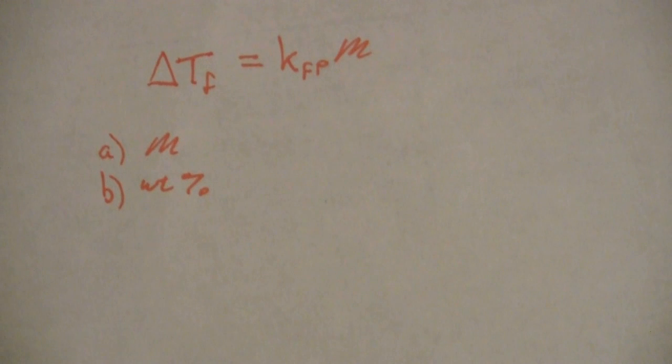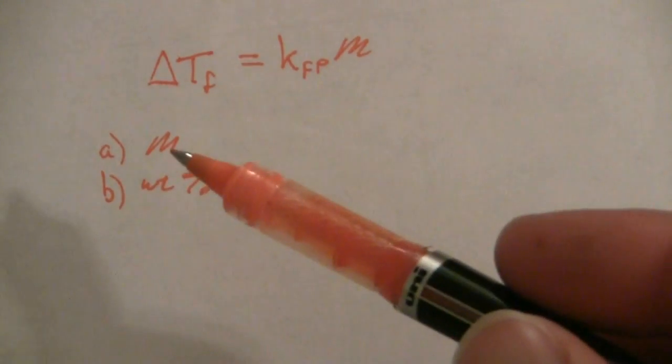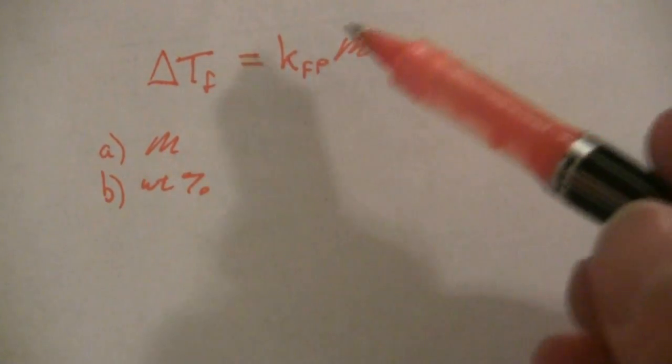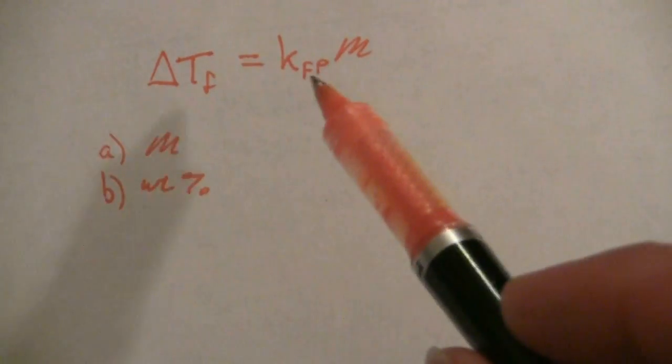Delta Tf equals the freezing point constant times the molality. The constant, of course, we will need to find. It's asking first for the molality, so we need to solve for that, which means we need to have the delta Tf and the kf for the freezing point.